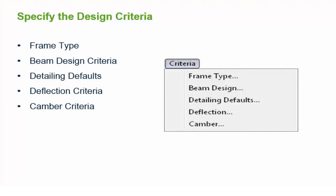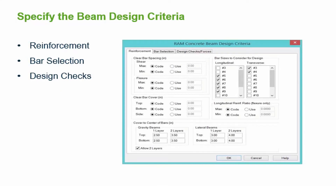Before you design any of your concrete beams, you must first specify the design criteria in the RAM Concrete Beam Design mode. This will include your frame type, your beam design criteria, your detailing defaults, your deflection criteria, and the camber criteria. The first set of criteria we will specify is the beam design criteria. Global parameters will be used in the designing and optimizing of beam lines, and they can be defined for your reinforcement, your bar selection, or your design checks.